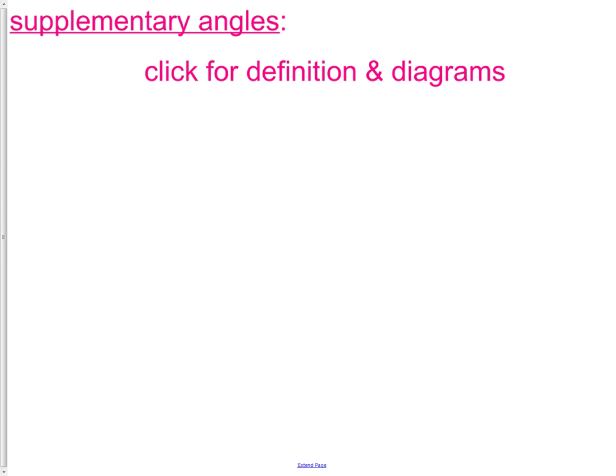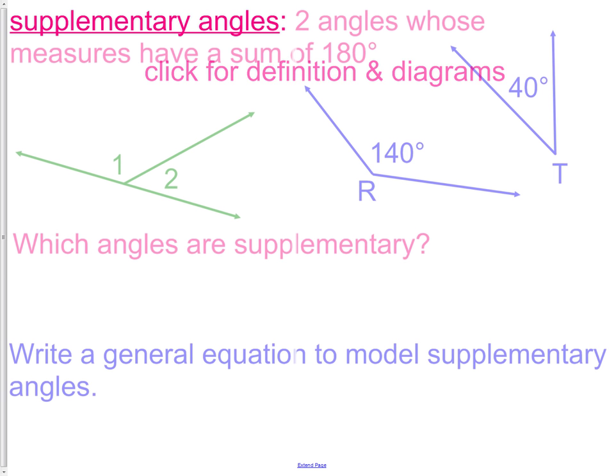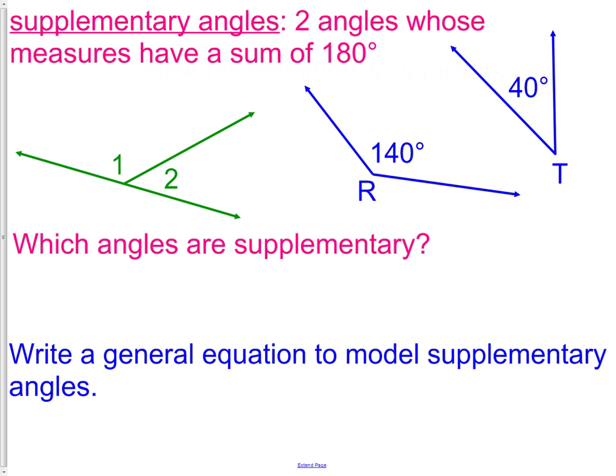Next we have supplementary angles. Supplementary angles are very similar. However, they're two angles who add up to 180 degrees instead of 90, like complementary. So supplementary is 180, complementary is 90.